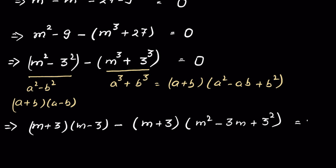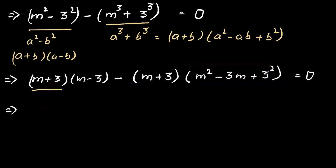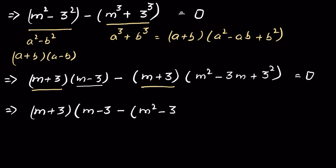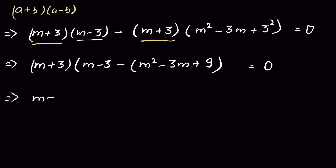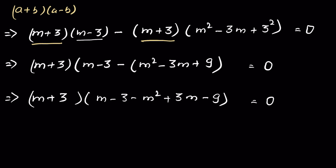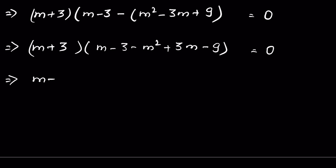So the full expression is (m + 3)(m − 3) minus (m + 3)(m squared minus 3m + 9) equals 0. Here (m + 3) is the common factor, so we factor it out: (m + 3) times the quantity (m minus 3 minus m squared plus 3m minus 9) equals 0, which simplifies to (m + 3)(−m squared + 4m − 12) equals 0.